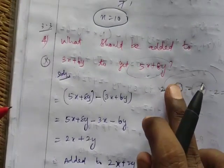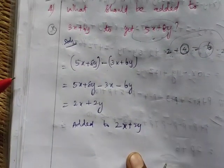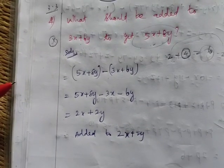When you add 2x plus 2y to 3x plus 6y, you get 5x plus 8y. That's the answer. Okay, thank you.